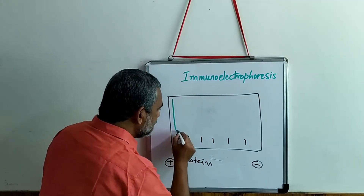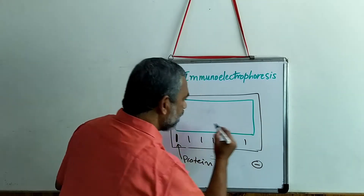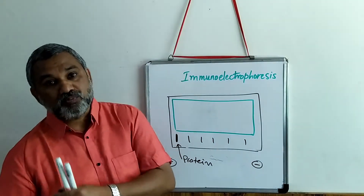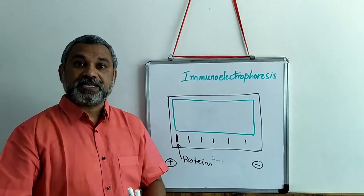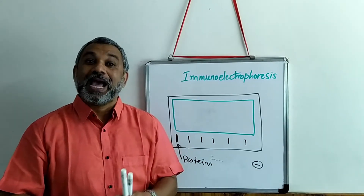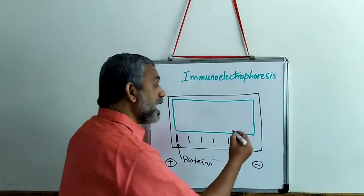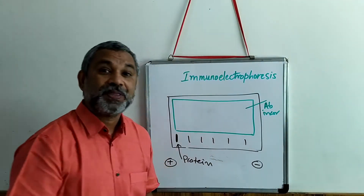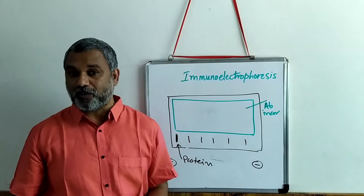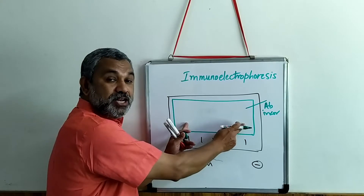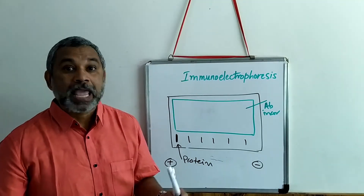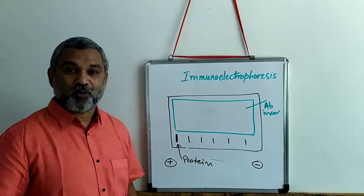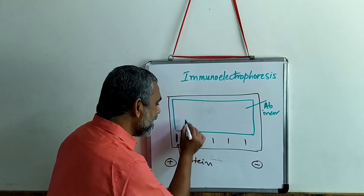We cut a trough into the whole gel and remove it. After that, we melt agarose, add antibody to it, and pour it into the trough. This antibody-incorporated agarose is poured in and allowed to solidify. After solidification, we allow simple migration of the proteins.